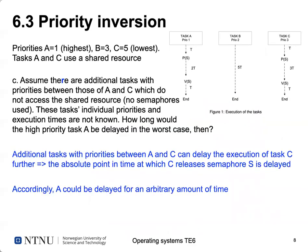The final question assumed there are additional tasks with priorities between A and C that do not access the shared resource — similar to task B. The question was: how long would the high-priority task be delayed in the worst case? These additional tasks can delay the execution of task C further, pushing back the absolute point in time at which C releases the semaphore. In this example, task A could be delayed for an arbitrary amount of time.